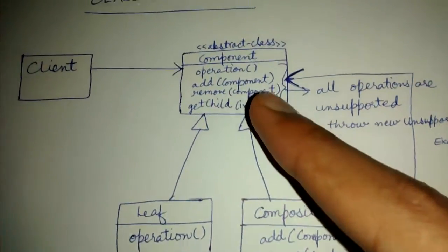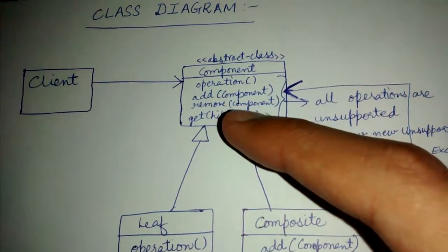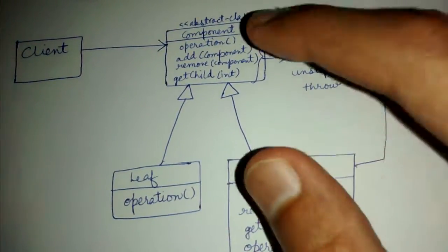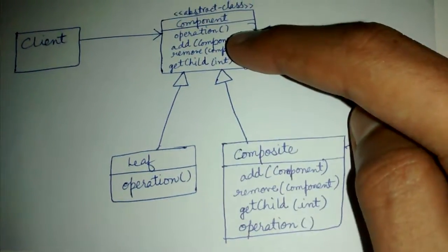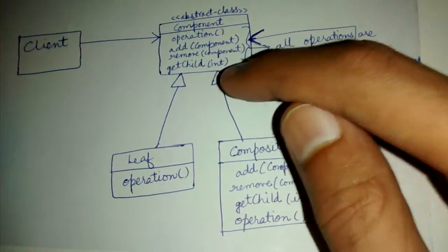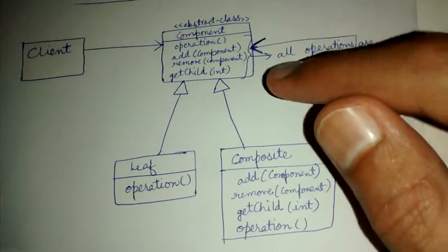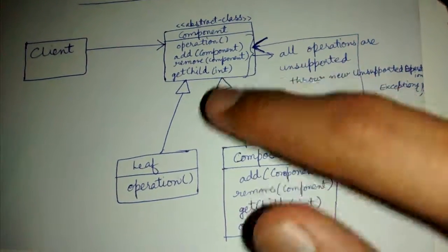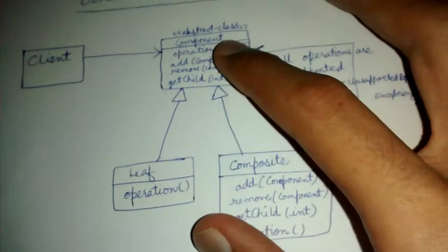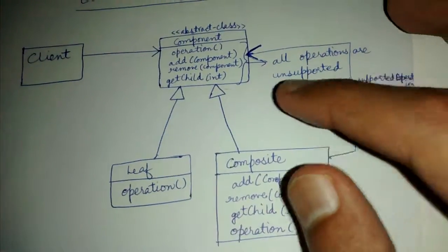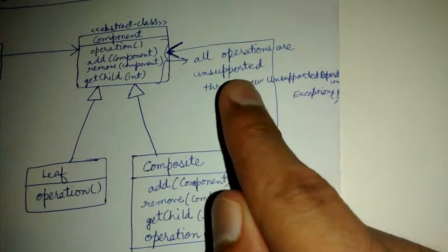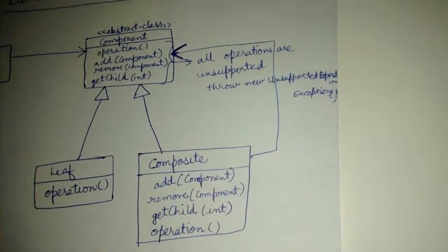We provide a default implementation of add, remove, and get child methods in the component class. Since a component can be a leaf or a composite, and in the parent class we're not sure which it is, all the default implementations either leave them unimplemented or we can implement them in such a way that they throw an UnsupportedOperationException.